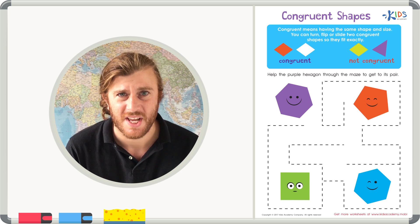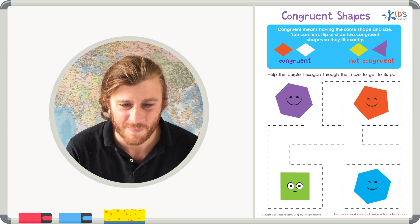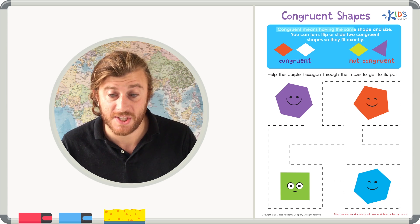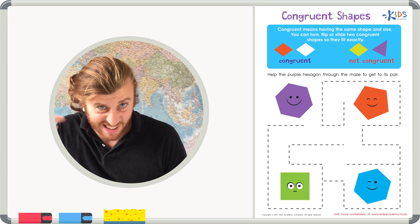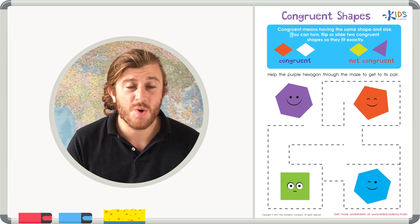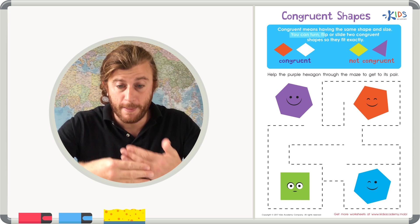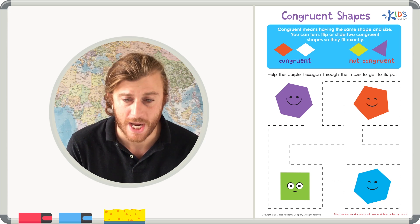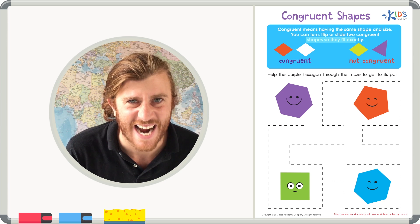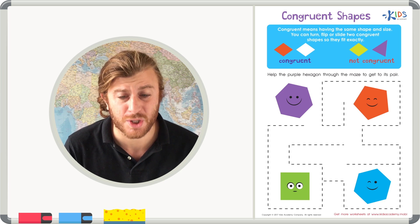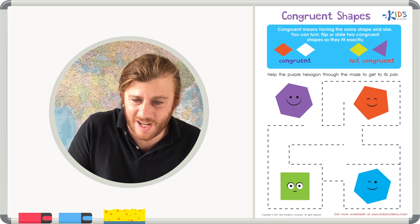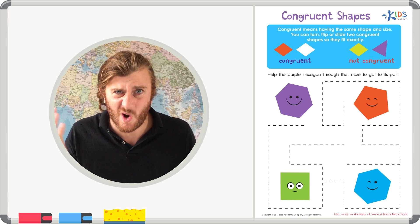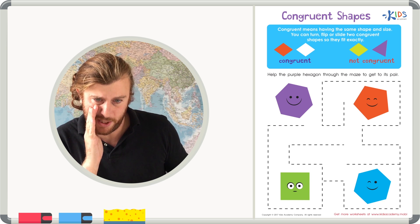Let's read the directions and then try this worksheet together. Congruent means having the same shape and size, like I just said. You can turn, flip, or slide two congruent shapes so they fit exactly. And if those two shapes fit exactly onto each other, like this example right here, you know that those shapes are equal or congruent.